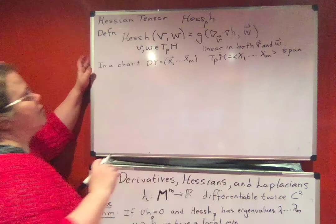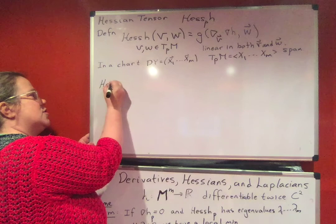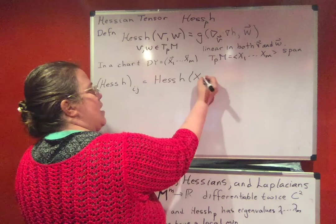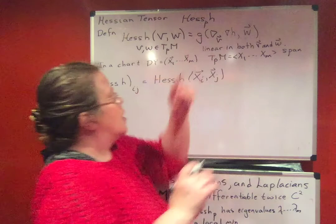Then all you need to know to figure out the Hessian is to write this here as what it would do to each x_i x_j combination, so you write a Hessian of h_ij is defined to be Hessian of h, just like it was with g_ij, Hessian of h x_i x_j.